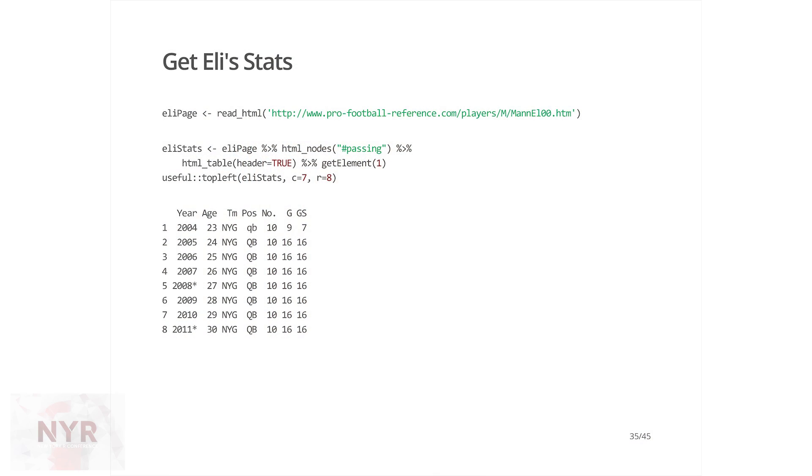Let's say we want to download Eli Manning's stats from Pro Football Reference — scrape the web. Forget BeautifulSoup; you can use rvest, which is faster than BeautifulSoup. We use rvest to read the HTML, parse out the nodes, and extract the table. You can extract any arbitrary CSS selector or XPath. We just extracted Eli's career stats.